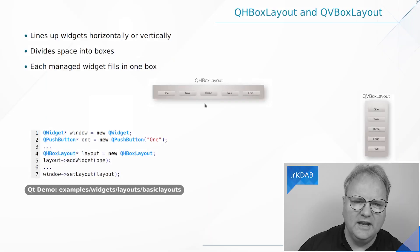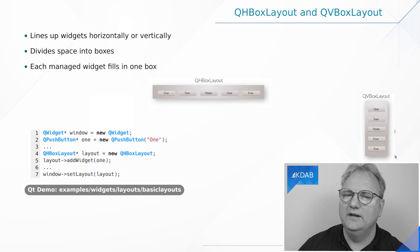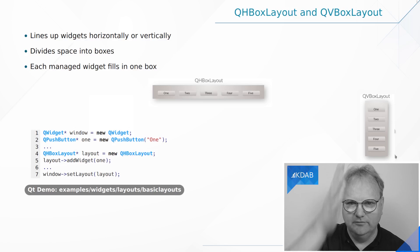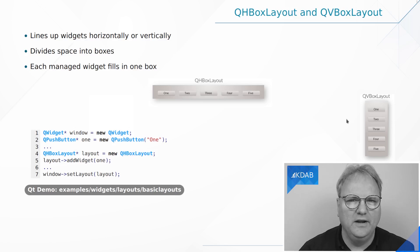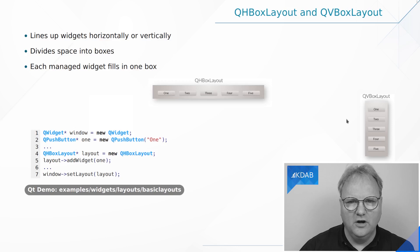Let's run through what layout managers we have in Qt. We have four different layout managers: VBoxLayout, HBoxLayout, GridLayout, and FormLayout. The HBoxLayout and VBoxLayout can be shown together — remember, it's the horizontal or vertical layout manager, putting stuff next to each other or putting stuff on top of each other.